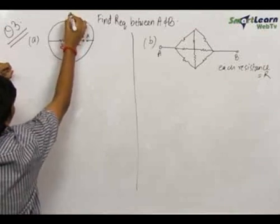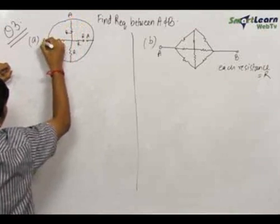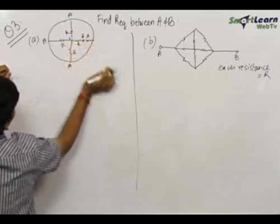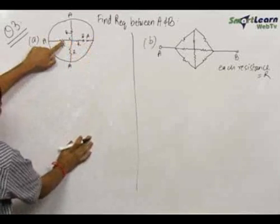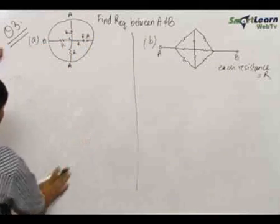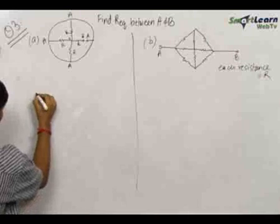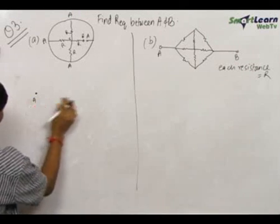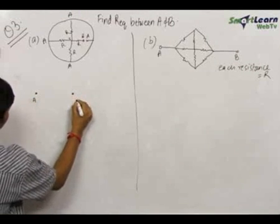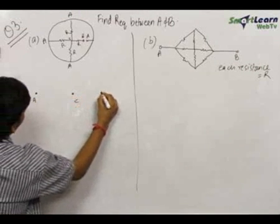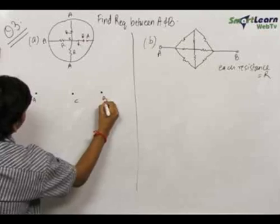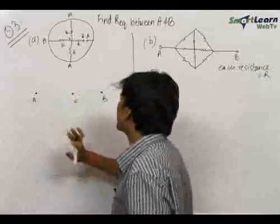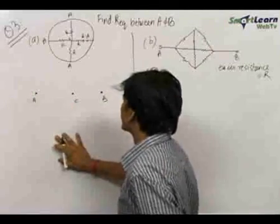All these points are at potential A. This is a point with a different potential, that is C. So I mark it as C. Now to simplify the diagram, you mark A on one side, C on one side, and B on one side. Now draw all the resistances between the various potentials.